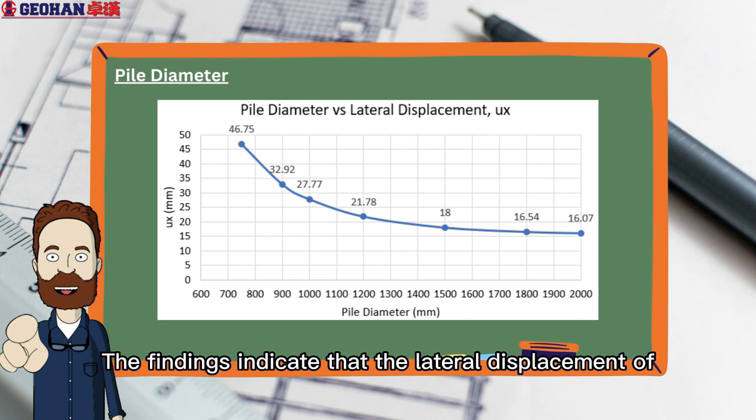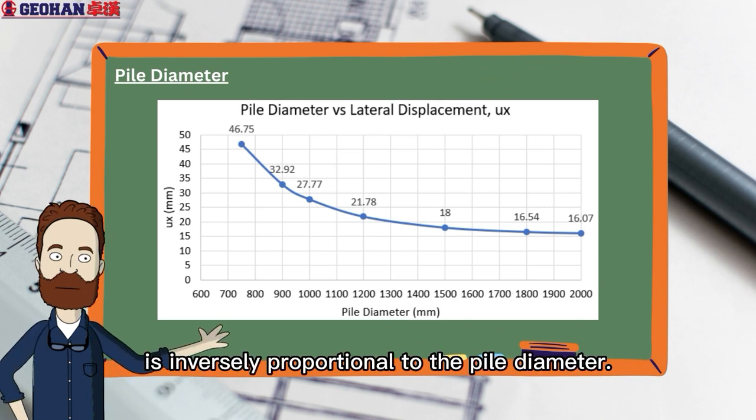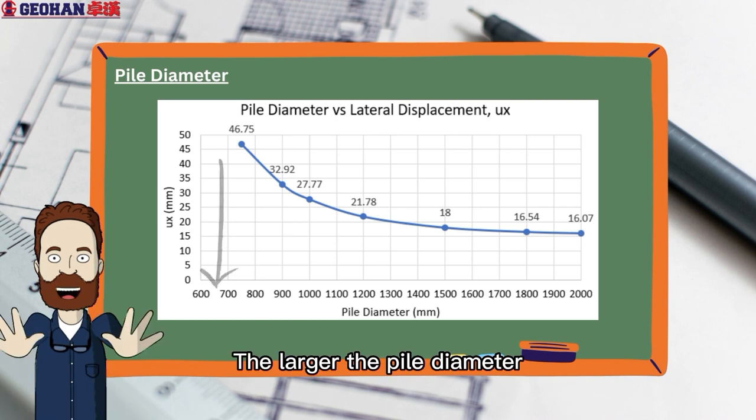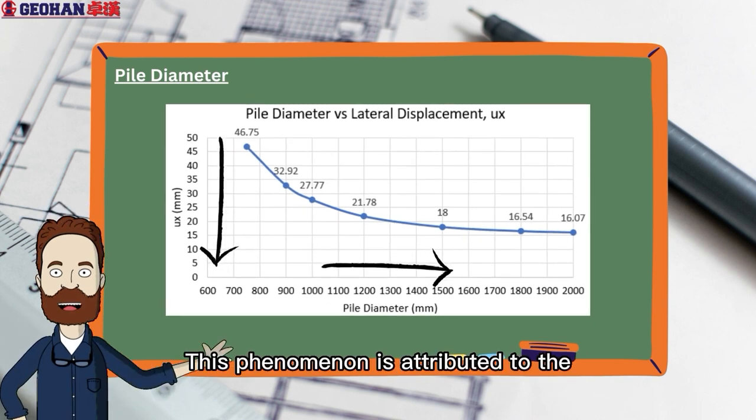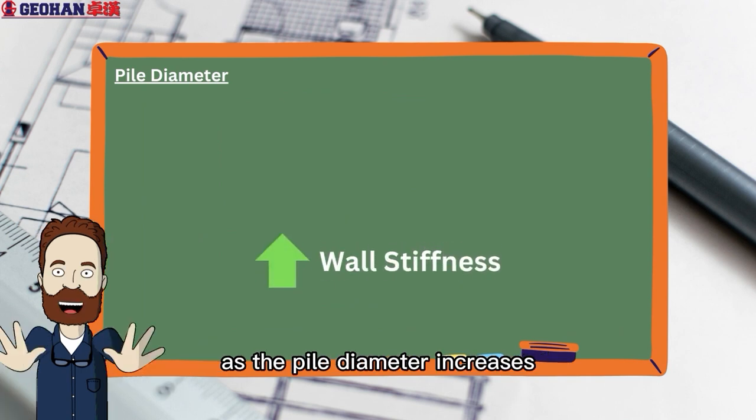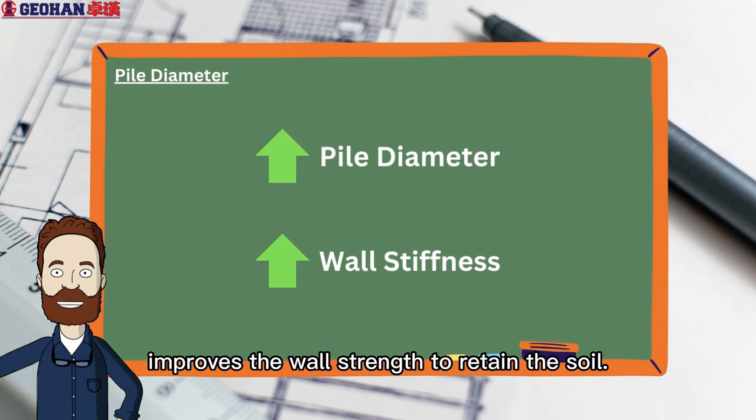The findings indicate that the lateral displacement of the wall is inversely proportional to the pile diameter. The larger the pile diameter, the smaller the lateral displacement of wall. This phenomenon is attributed to the enhanced stiffness of the wall as the pile diameter increases, which in turn improves the wall strength to retain the soil.